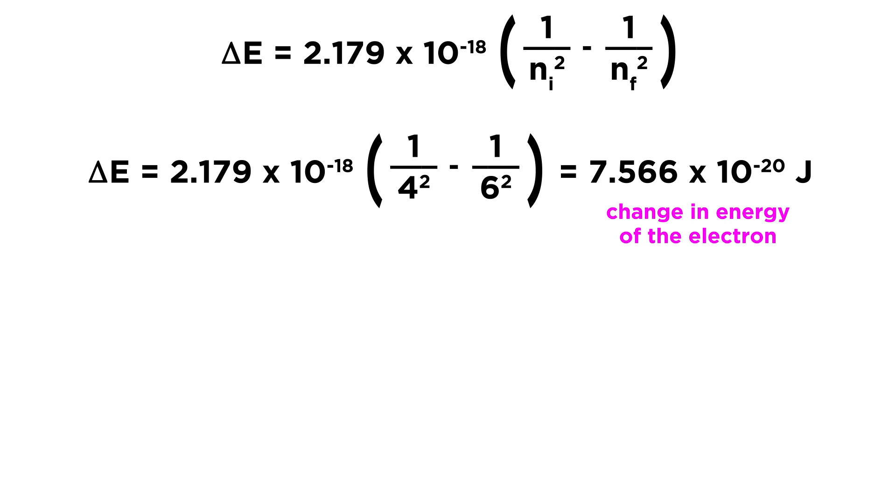This is useful because due to conservation of energy, the change in energy of the electron equals the energy of the photon it absorbed. A photon struck the electron, the electron absorbed that energy, and jumped up to a higher energy level.